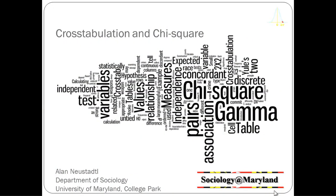In this video we're going to continue exploring cross tabulation. In particular, we're going to look at a measure of association called Yule's Q and then take a look at probabilities, odds, and odds ratios. We'll have another video that will look at another measure of association called gamma, but we're going to put that off till later.